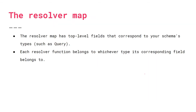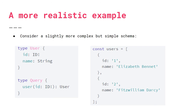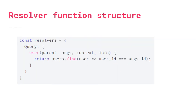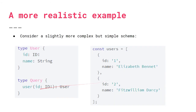Now let's look at a more realistic example. We have an object type User with scalar fields, and a type Query with a field called user that returns a User with a specified ID. For the data source, we're using a hard-coded array of user objects for simplicity instead of an actual database connection — but this represents what would realistically come from a database.